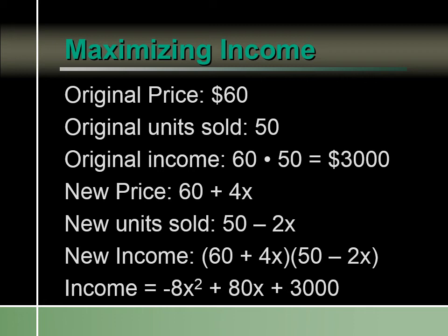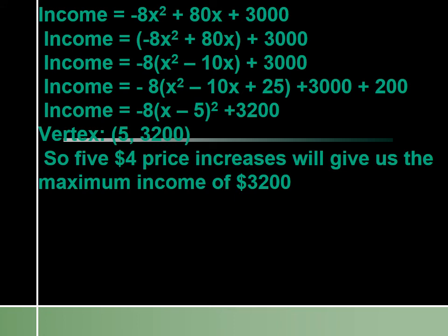FOILing that out gives us negative 8x squared plus 80x plus 3,000. To put it in work form, factor out negative 8 to get negative 8 times x squared minus 10x. Take half of 10, which is 5, and square it to get 25. We're adding 25 times negative 8, which is negative 200, so we add 200 on the outside. The perfect square form is negative 8 times x minus 5 squared, plus 3,200.